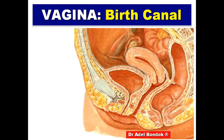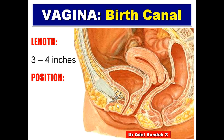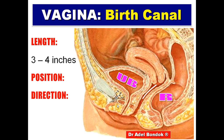The vagina, or birth canal, is three to four inches long. The anterior wall is shorter — measuring three inches — while the posterior wall measures four inches. The vagina is located between the urinary bladder and urethra anteriorly, and the rectum and anal canal posteriorly. It is directed downward and forward and opens into the vestibule of the vulva.